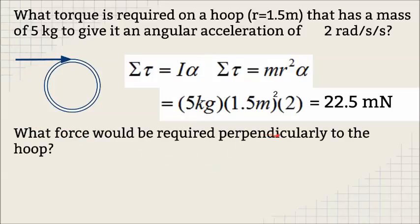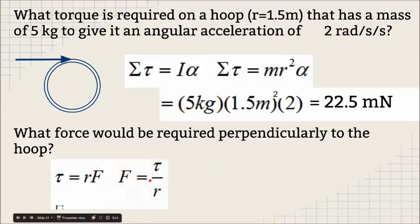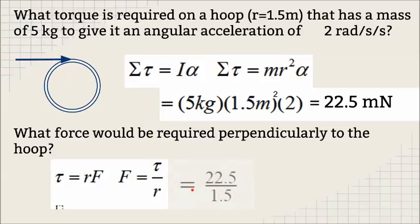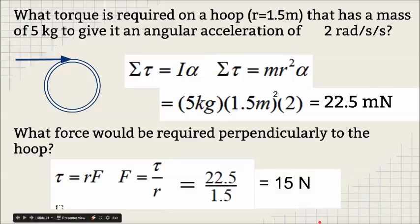What force would be required perpendicularly to the hoop? So now we want to figure out what the force is to make this angular acceleration. We take the definition of torque. It's going to be perpendicular, so we don't have to worry about the sine of theta. We're just going to solve for the force. We take the torque of 22.5, divide it by the radius of 1.5, and that comes out to 15 newtons. So 15 newtons is applied at this radius, and it will cause this hoop to have an angular acceleration of 2 radians per second squared.